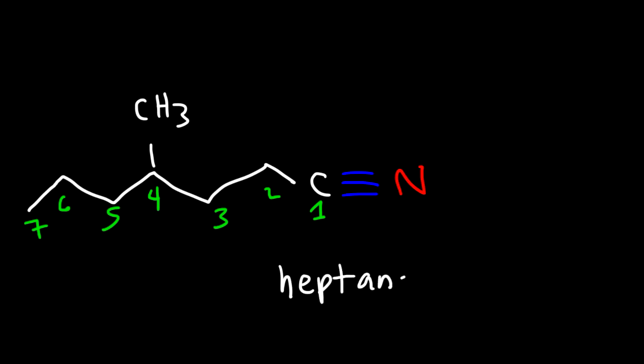Let's work on this example. So let's put a methyl group on this carbon. How can we name that molecule? So this is carbon 1, 2, 3, 4, 5, 6, 7. So a 7-carbon chain will be heptane. And we have the nitrile functional group. So this is heptane nitrile. And then there's a methyl group on carbon 4. So it's 4-methylheptane nitrile.